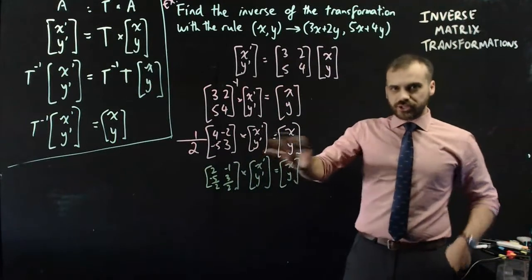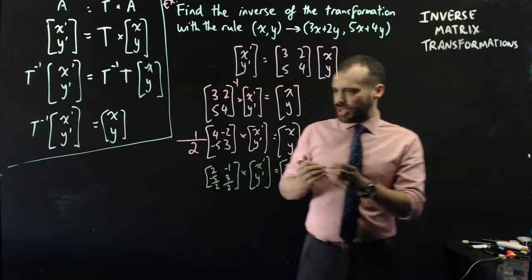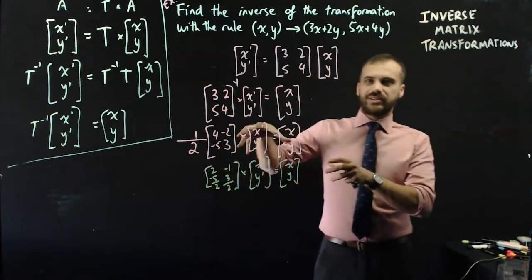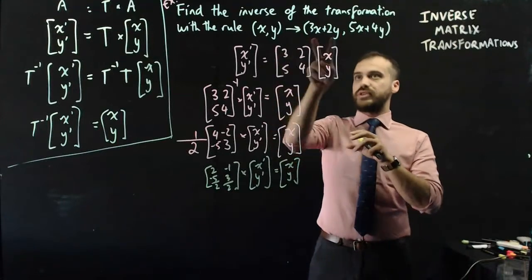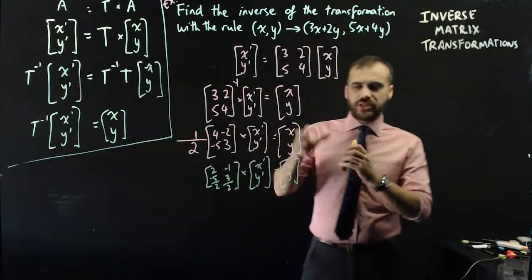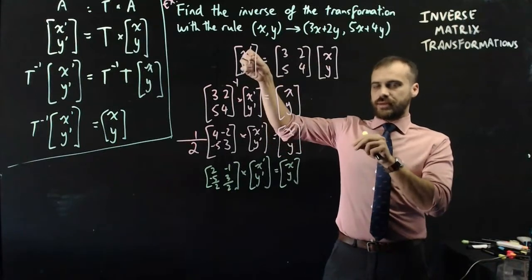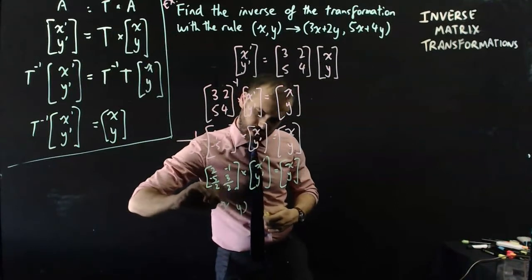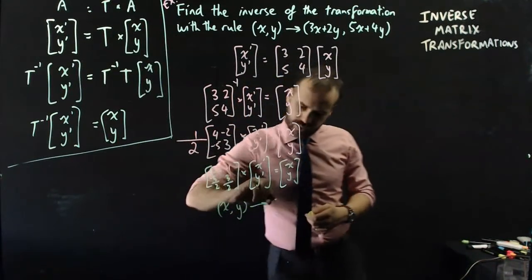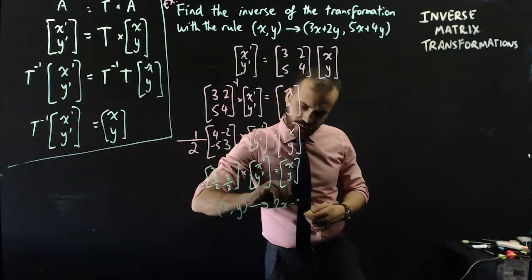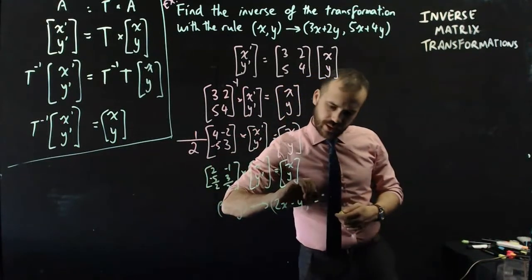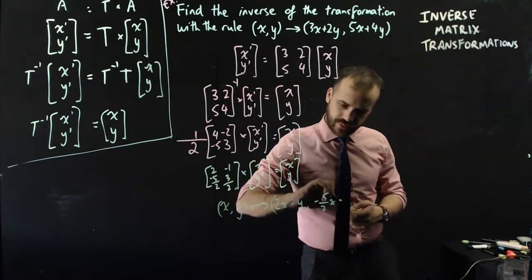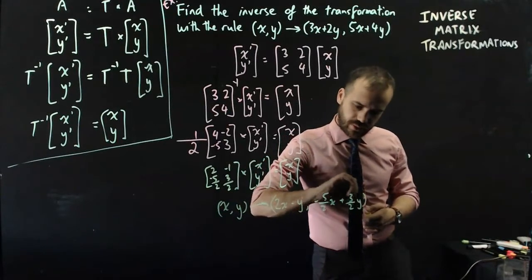Okay, I'm actually kind of done at that point. I have this, which is my inverse transformation. So now I can say that the inverse transformation of this transformation, the thing that would take an image and move it back to where that original object was, is x y maps to 2x minus y comma negative 5 on 2x plus 3 on 2y.